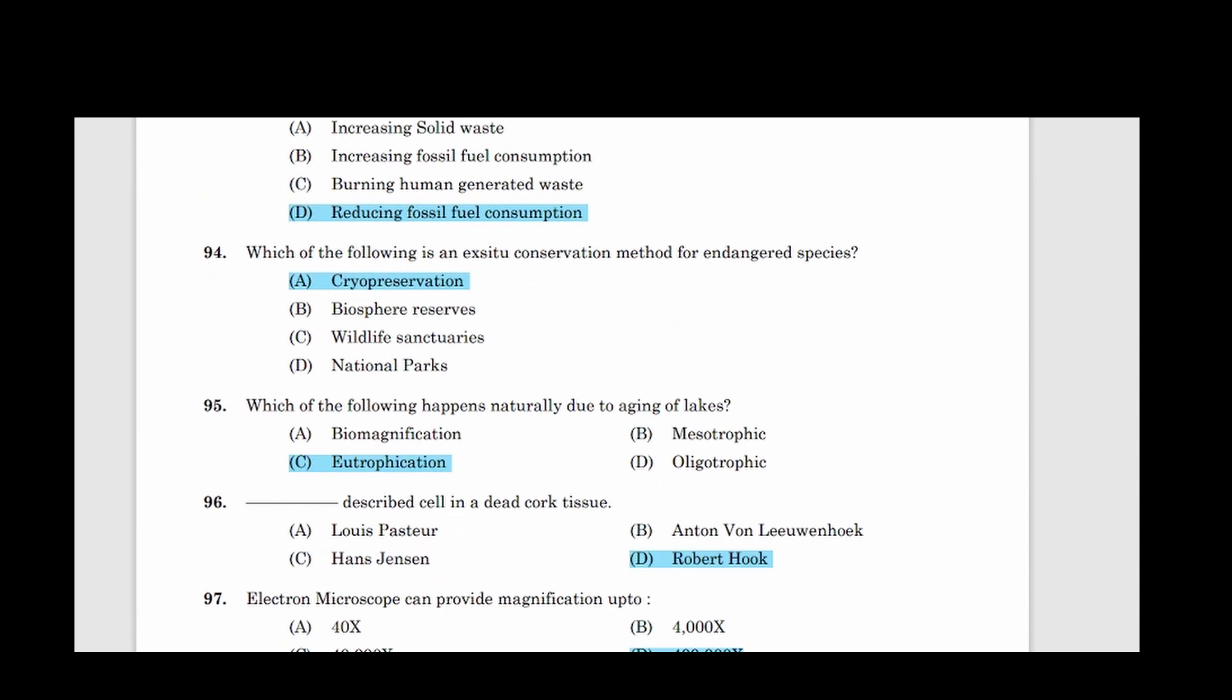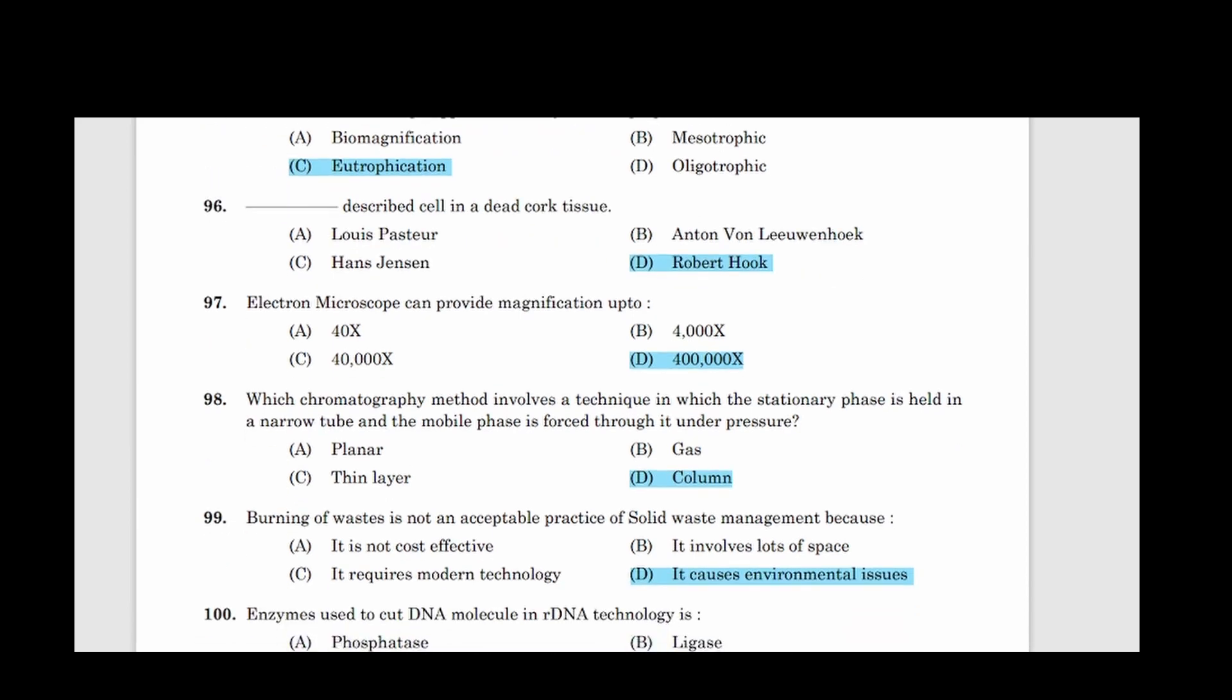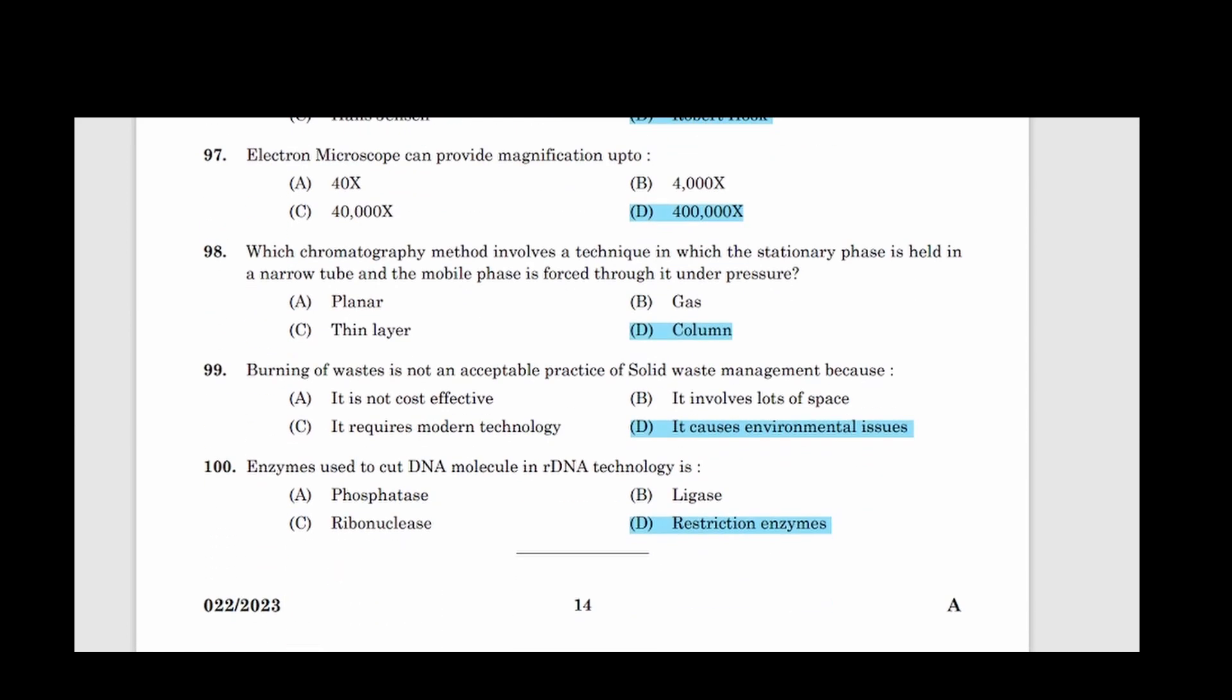94: Which of the following is an ex situ conservation method for endangered species? Correct answer option A, Cryopreservation. 95: Which of the following happens naturally due to aging of lakes? Correct answer option C, Eutrophication. 96: Dash described cell in a dead cork tissue. Answer option D, Robert Hooke. 97: Electron microscope can provide magnification up to? Correct answer option D, 200,000X. 98: Which chromatography method involves a technique in which the stationary phase is held in a narrow tube and the mobile phase is forced through it under pressure? Correct answer option D, Column.